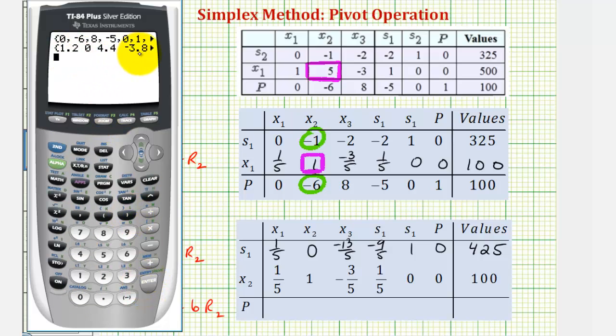Notice how it's giving us decimal values. To get the fraction values, we press math, enter, enter. So we have six-fifths, zero, twenty-two-fifths, negative 19-fifths, zero, one. If we move to the right, we can see the last entry is seven hundred. Let's go ahead and record these.